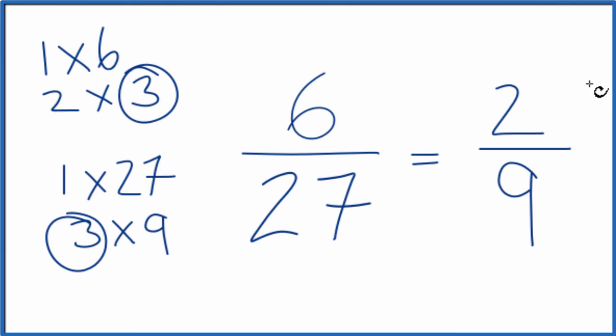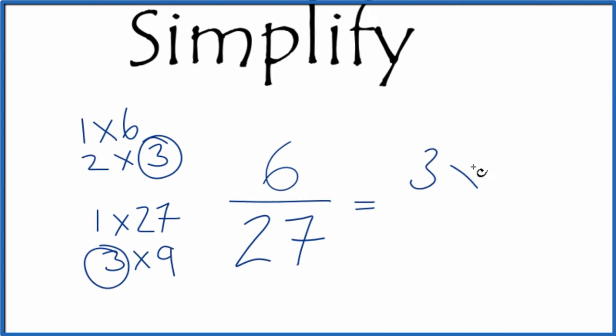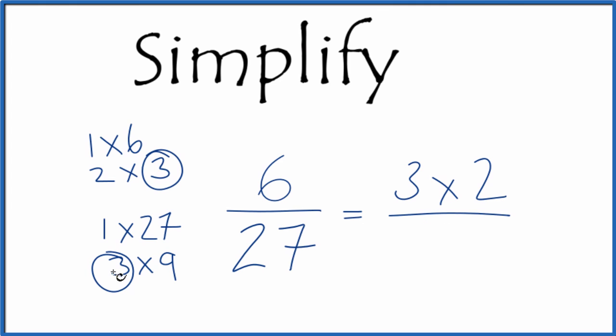There is one more way we could do this. We could say 3 times 2, that would equal 6, and 3 times 9, that would equal 27. Then we have 3 on the top and the bottom. Cancel that out. We end up with 2/9, which is what we got before.